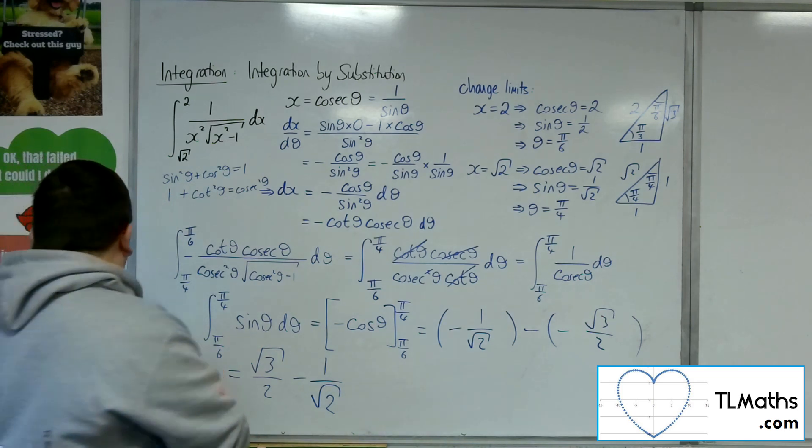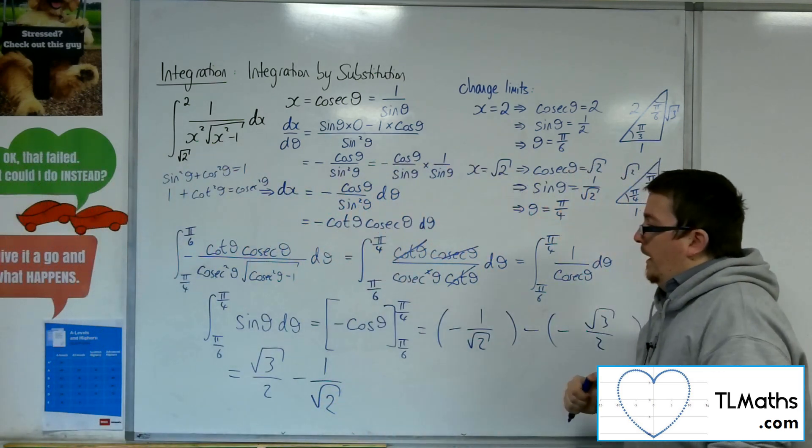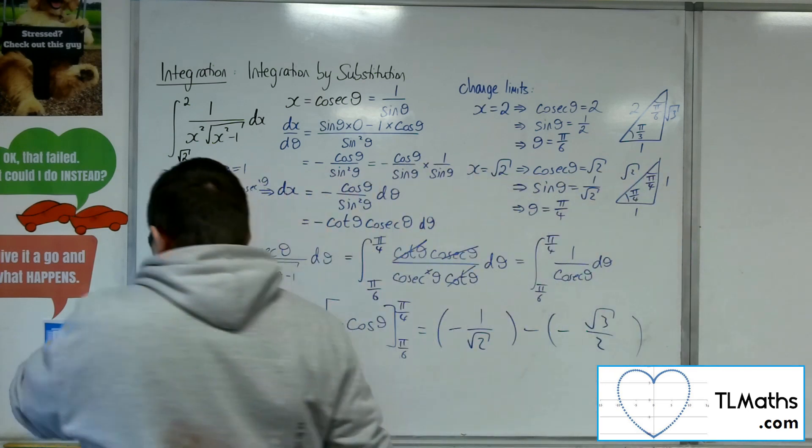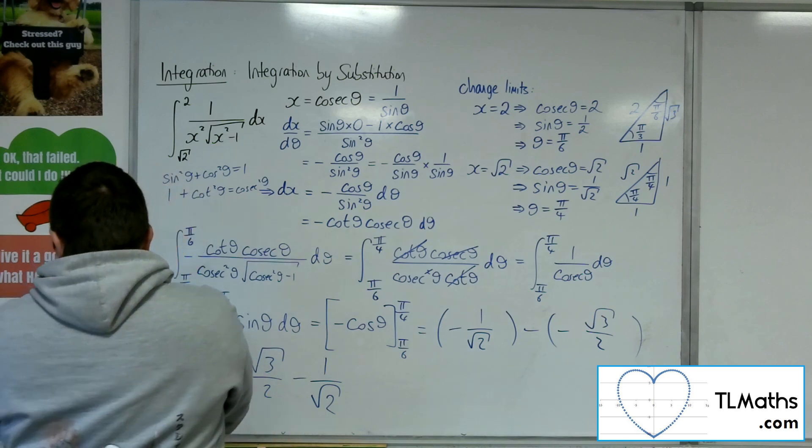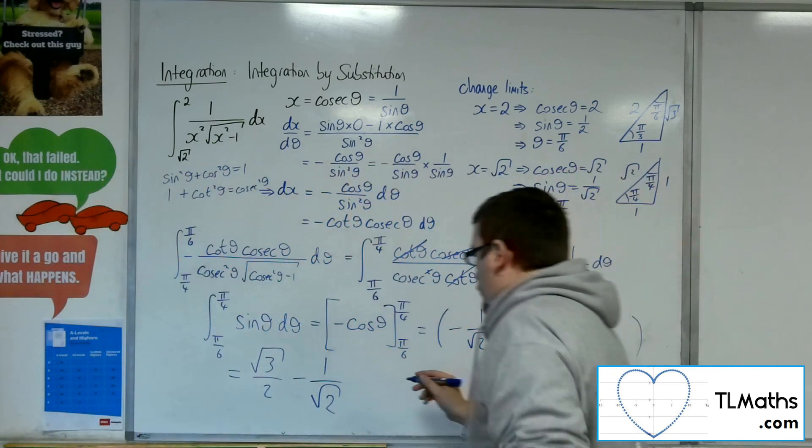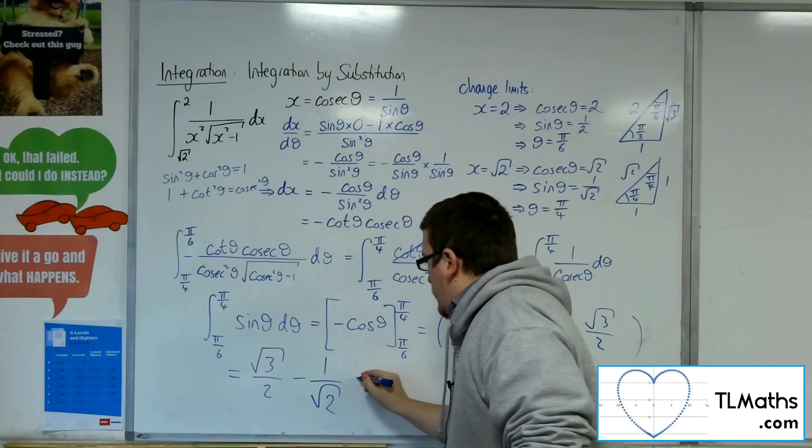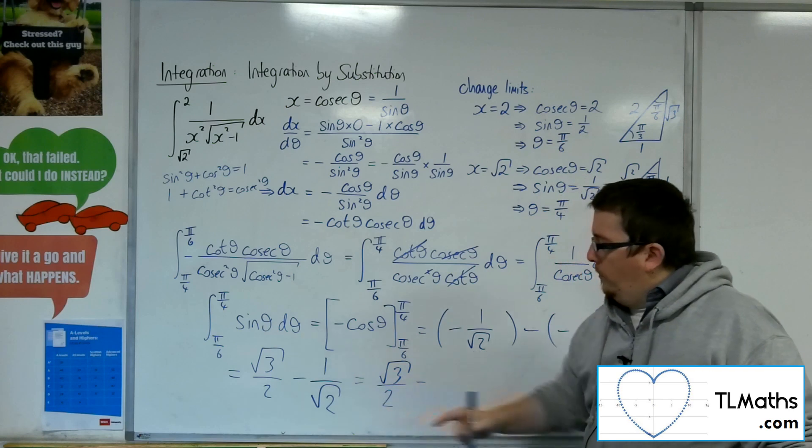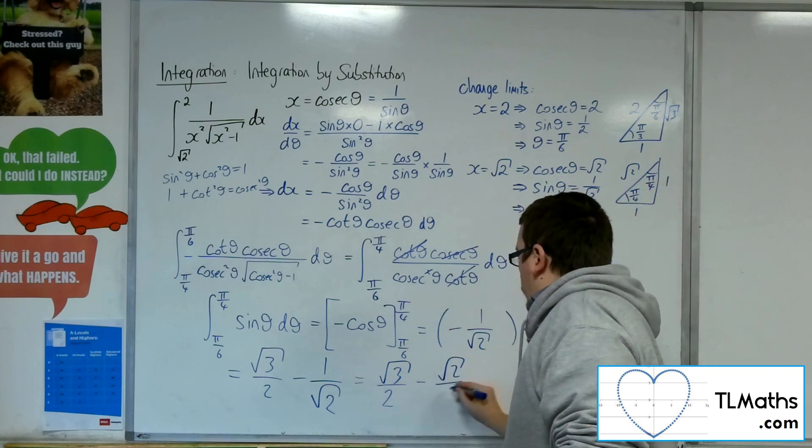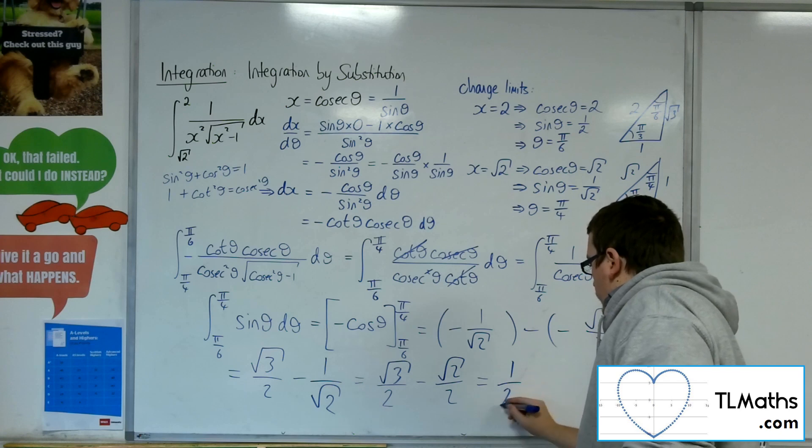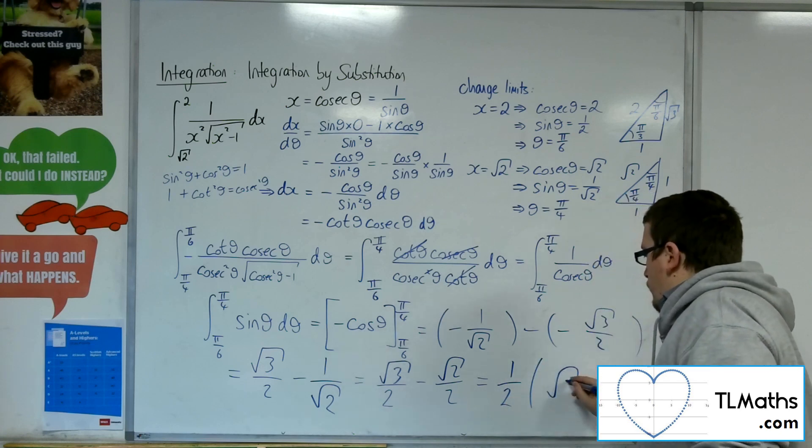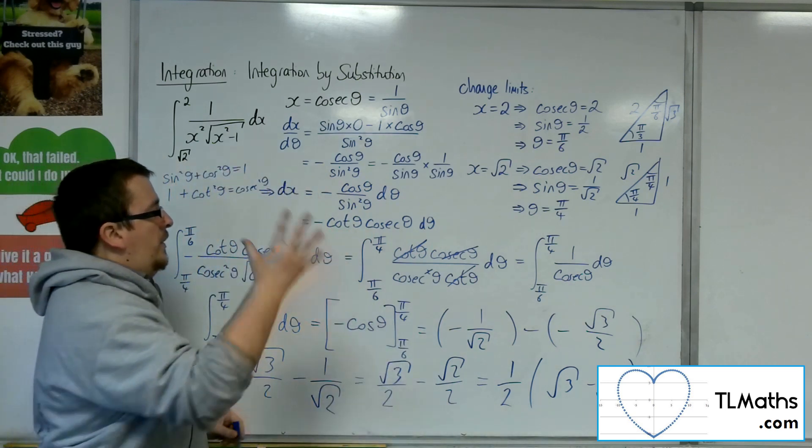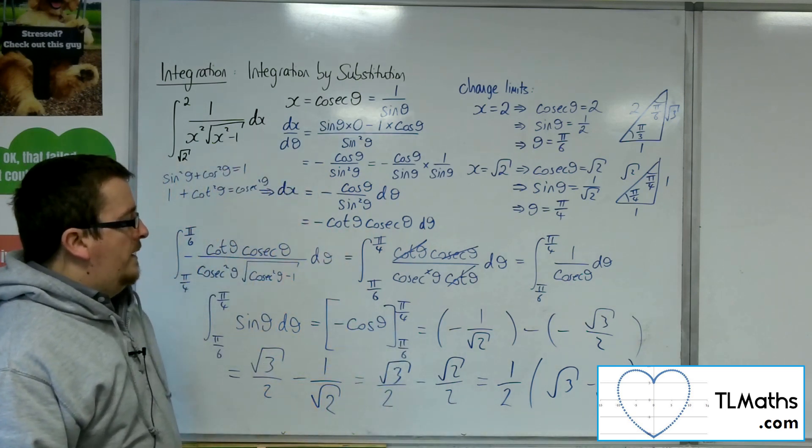So that is actually my final answer in exact form. Now I could rationalise the denominator on that second term. Multiply it top and bottom by root 2. It's going to get me root 2 over 2. Then you could simplify that. Saying well that's a half of root 3 take away root 2. And so that is your final answer.